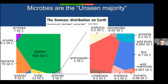Let's start with a striking figure that I find surprising it took until 2018 for someone to publish. It shows that microbes — from archaea, viruses, and bacteria to protists, fungi, and many plants like phytoplankton — are in a sense an unseen majority. The biomass distribution of Earth is hugely skewed towards microbial populations, meaning bacteria and phytoplankton play a huge role in ecosystem functioning globally.